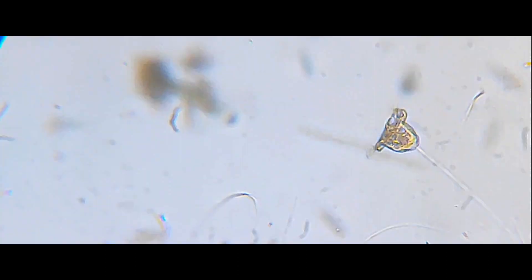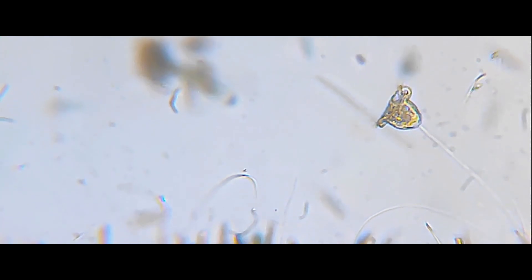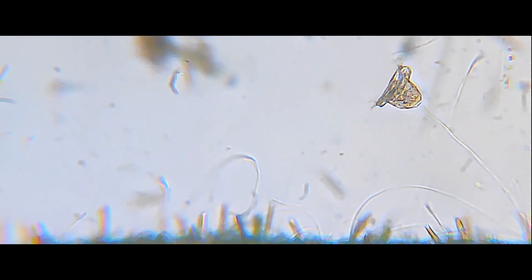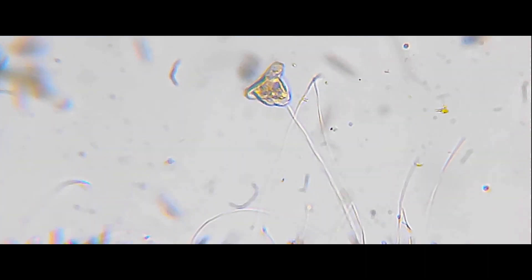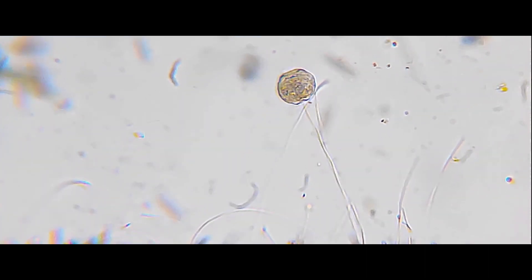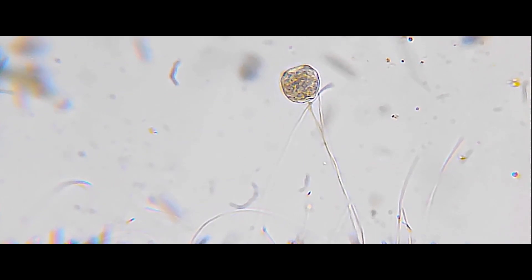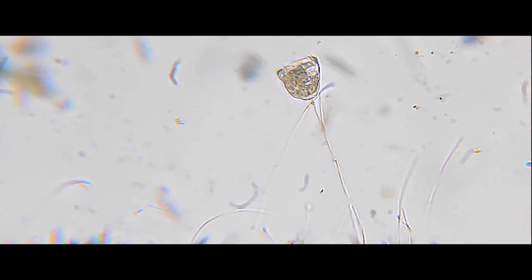But why are they doing this? What's the point, you may ask? This is how they get their nutrition. Vorticellae are filter feeders. They filter out organic particles and bacteria from the water, and they consume them with their mouth. And they create food vacuoles to digest them.